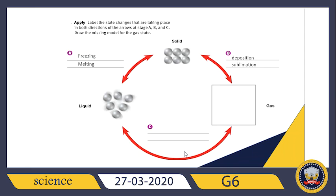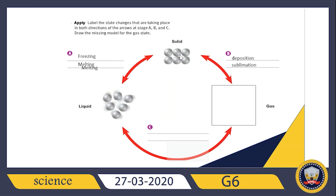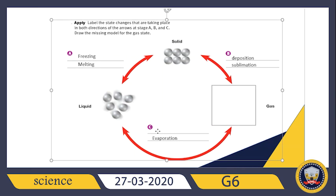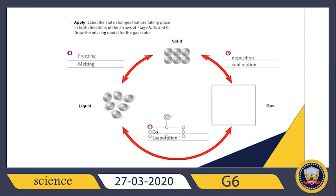For stage C, from liquid to gas it's called evaporation. And the change of state from gas to liquid is called condensation.